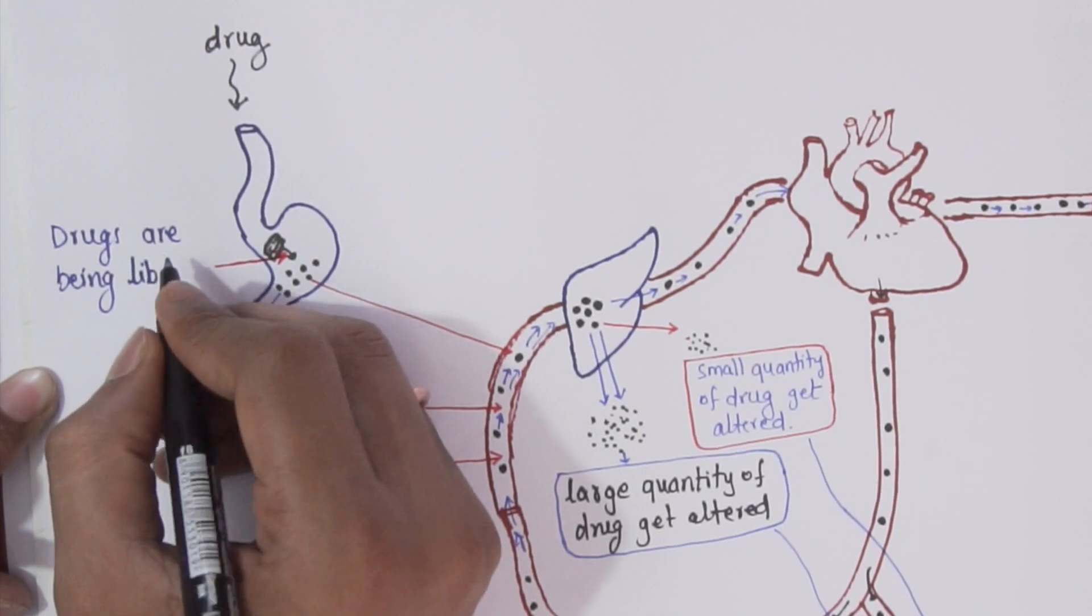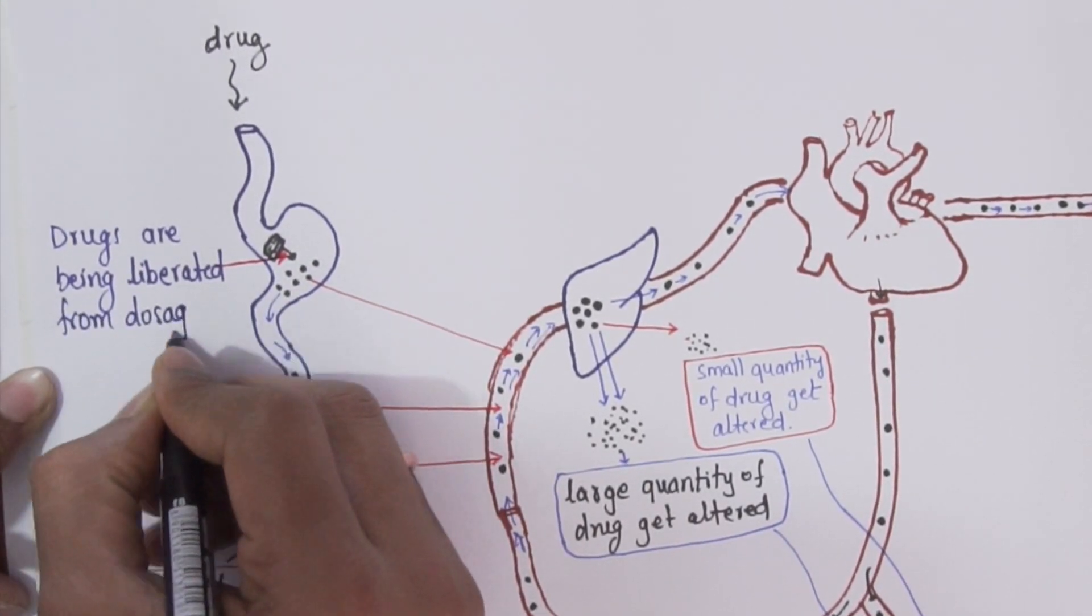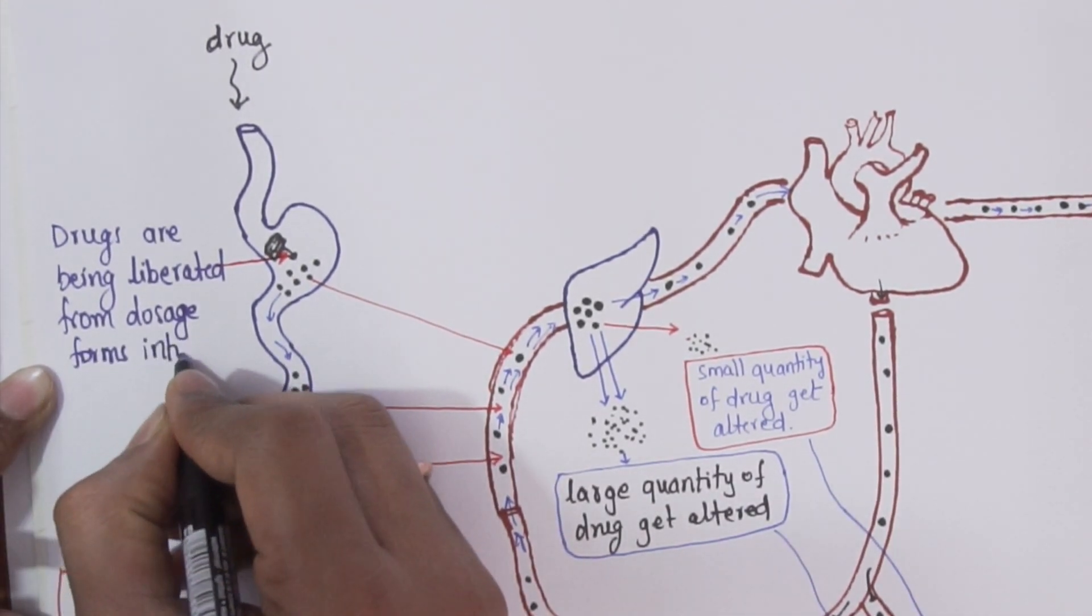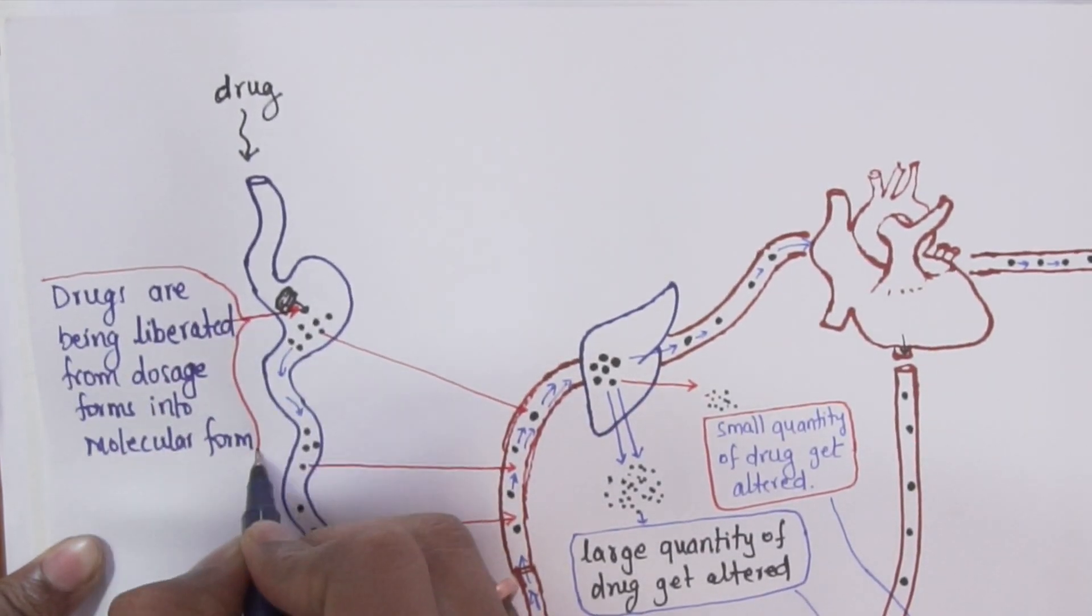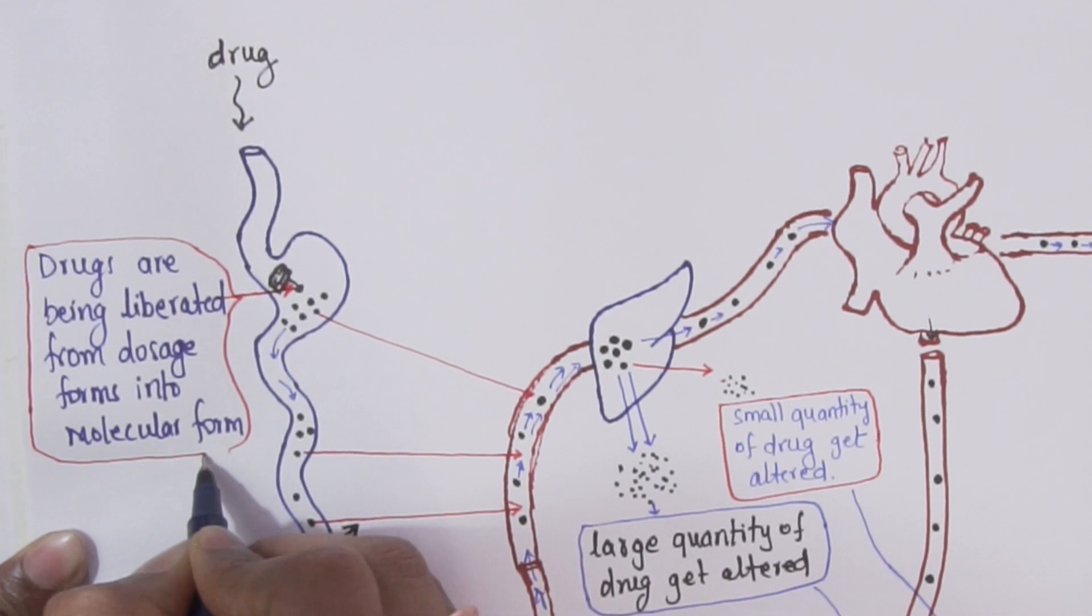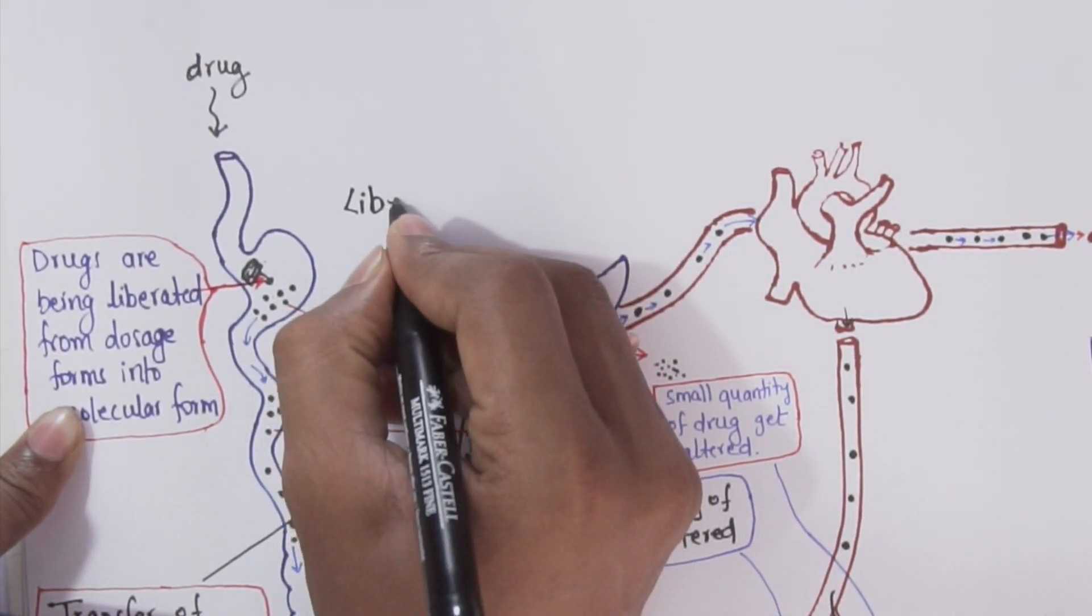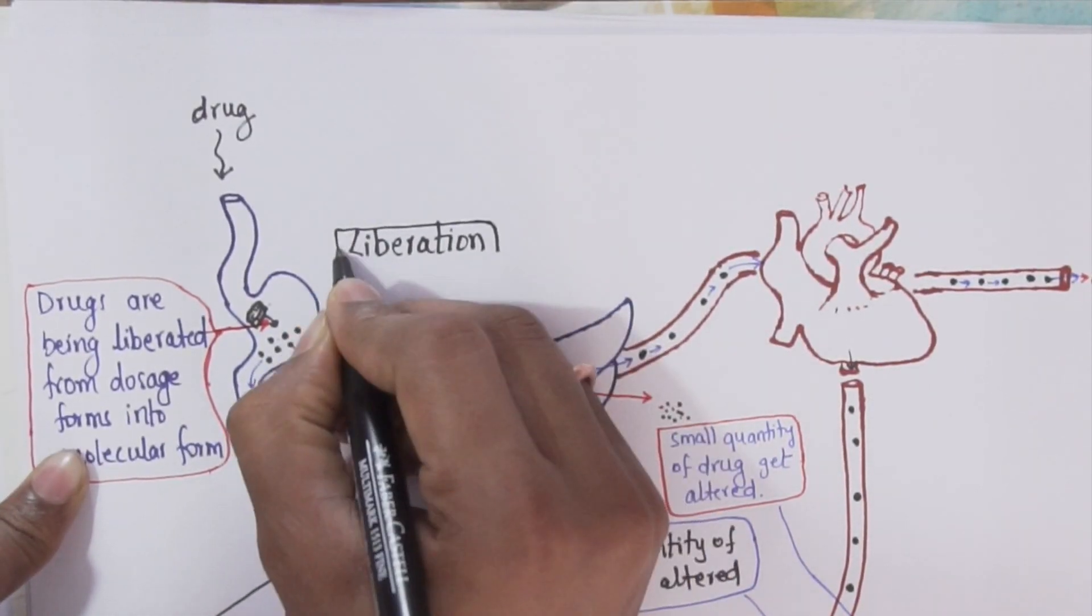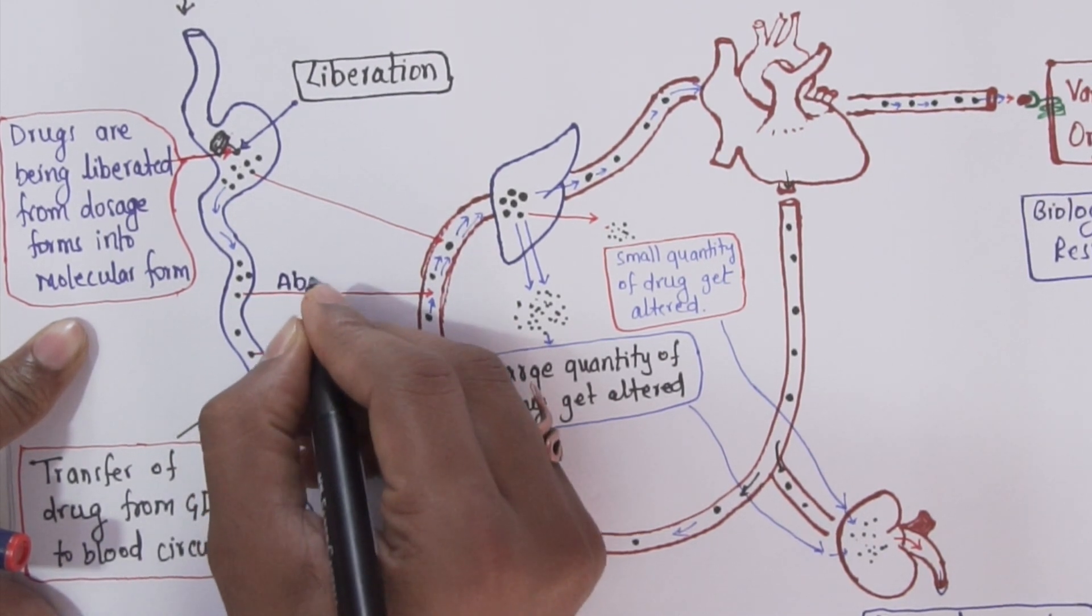Now we'll give the naming to various steps. This step is the first step where the drugs are being liberated or released from dosage form into molecular form so that they can be absorbed from GIT to the circulation. This step is called liberation, which is only for solid dosage forms like tablets and not for liquid dosage forms.